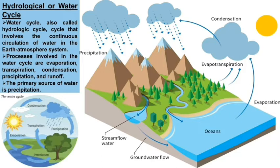These minute particles of water start joining due to low temperature and are abruptly converted into water droplets and snowflakes. That process is known as precipitation. Precipitation is also known as the falling of rain, snow, and hail.